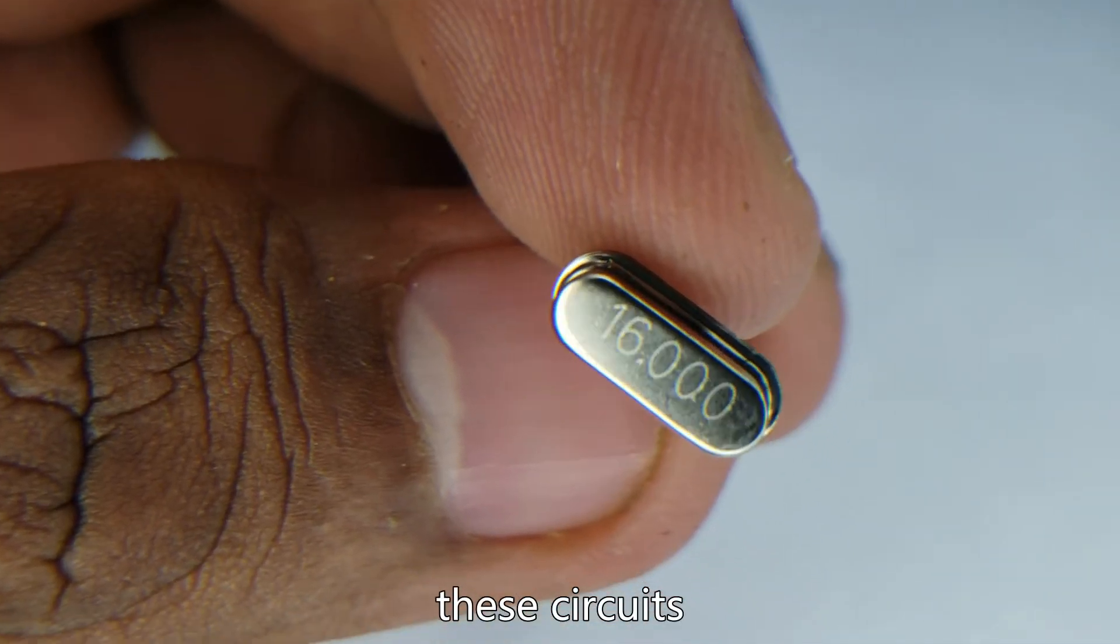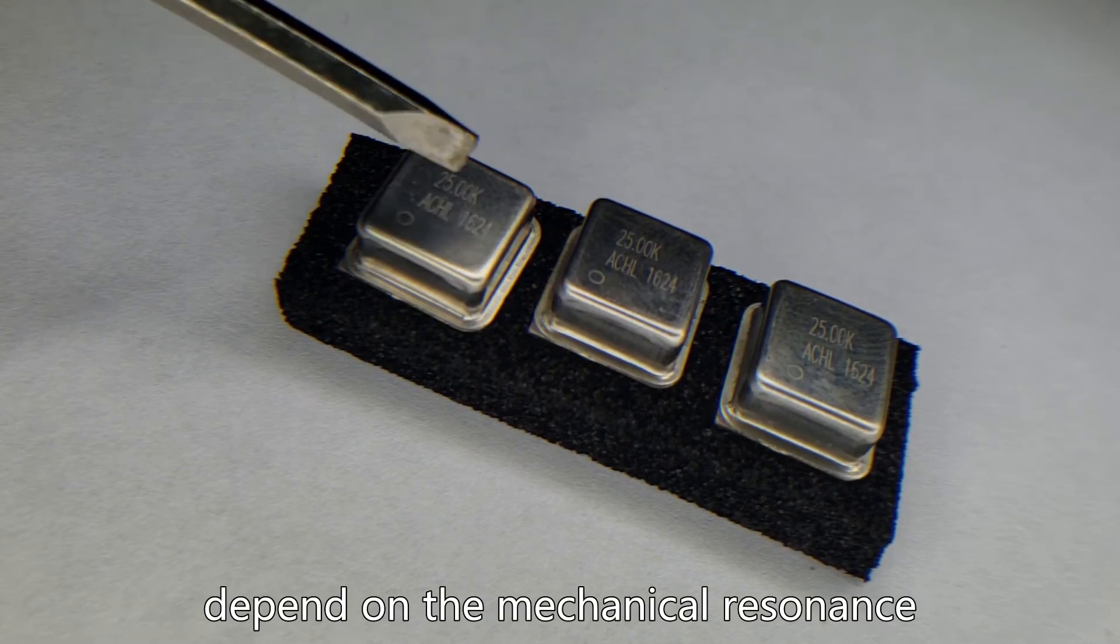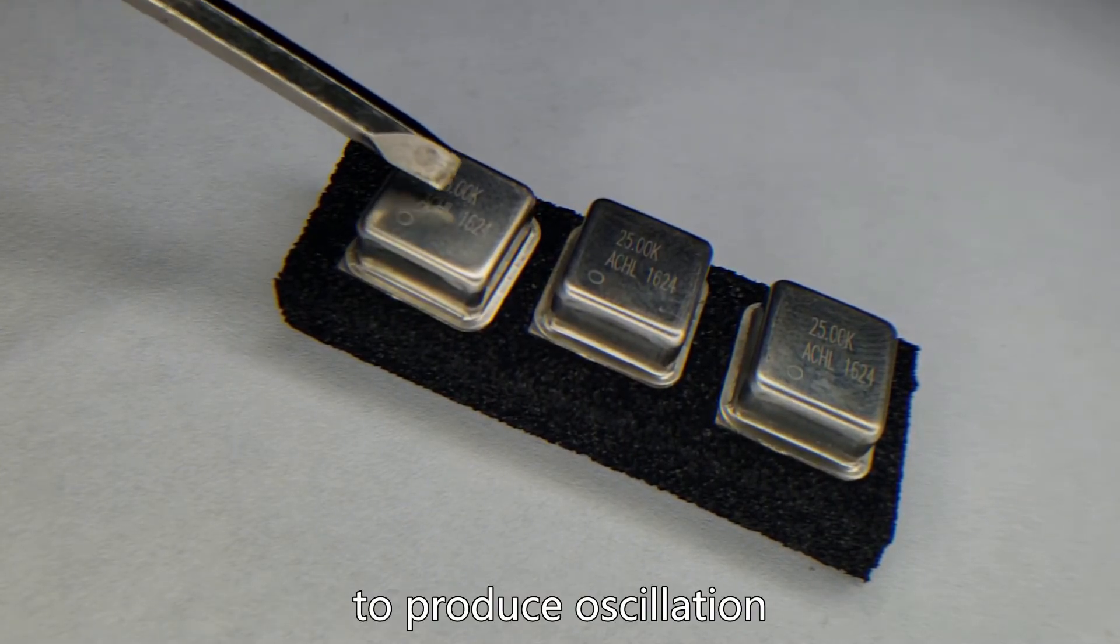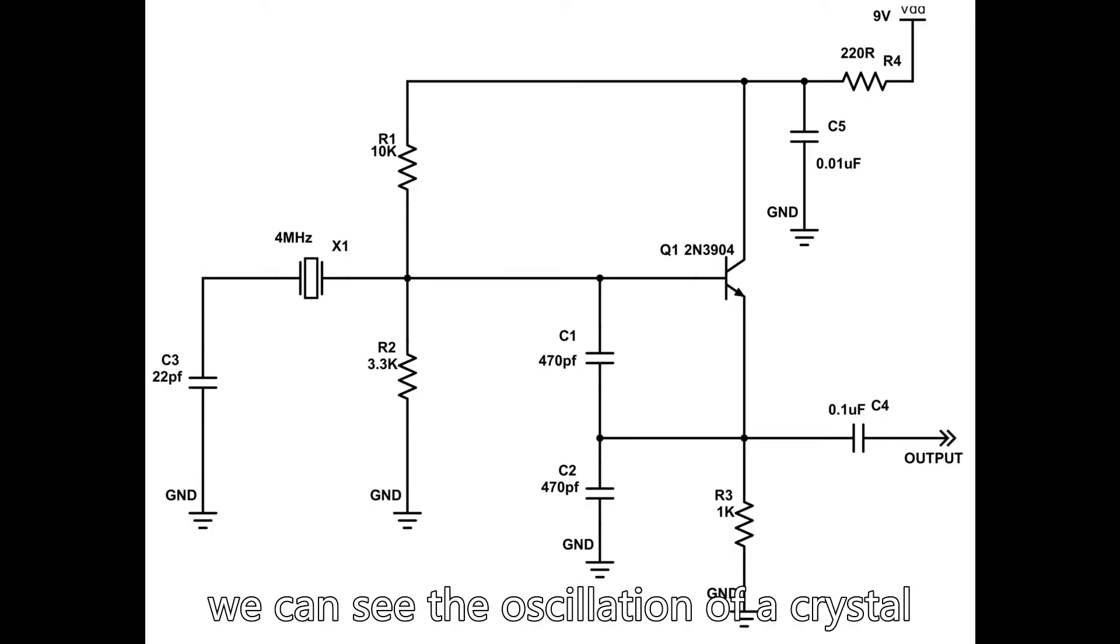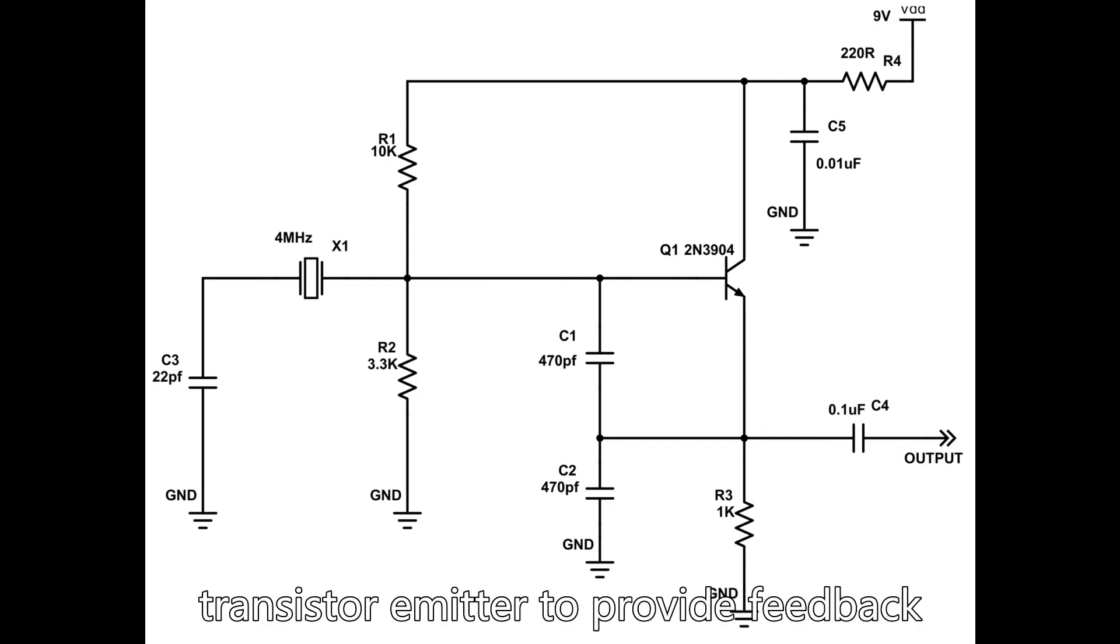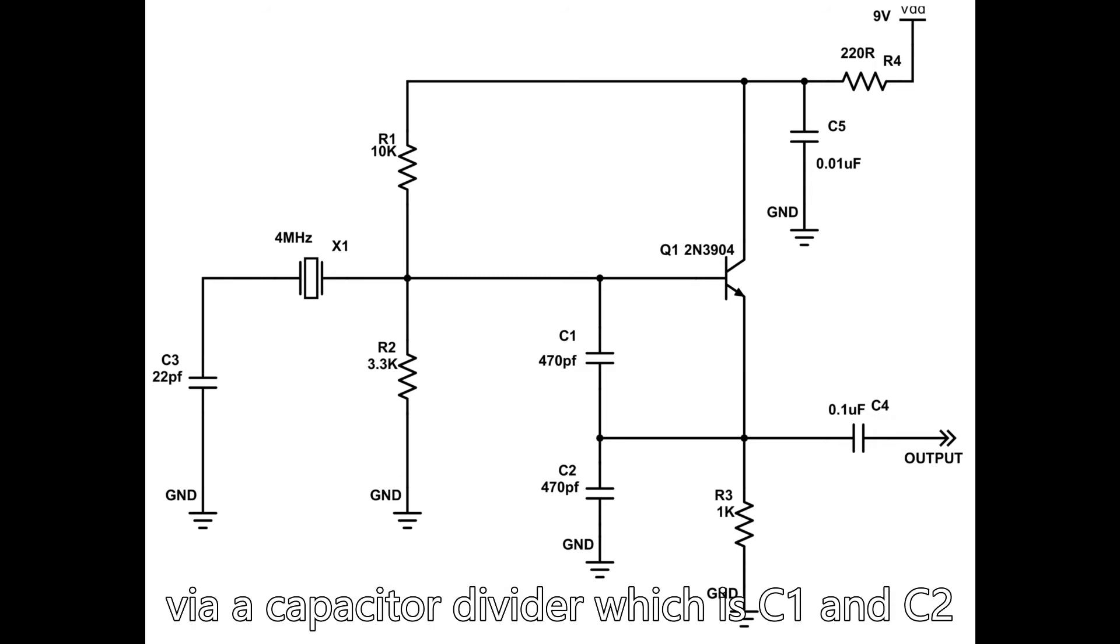These circuits depend on the mechanical resonance of a crystal oscillator to produce oscillation. We can see the oscillation of a crystal oscillator with a so-called Colpits crystal oscillator circuit. The Colpits crystal oscillator uses a transistor emitter to provide feedback to the circuit via a capacitor divider which is C1 and C2.